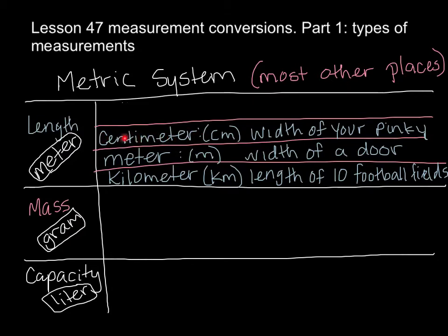A centimeter is a fractional unit of the meter — you're taking that meter and chopping it into even pieces, so it's smaller than a meter. If you think of the word century or percent, you know the base word cent means 100. So the centimeter is the meter chopped into 100 equal pieces. If I took that meter stick and chopped it into 100 equal pieces, each piece would be about the width of your pinky finger.